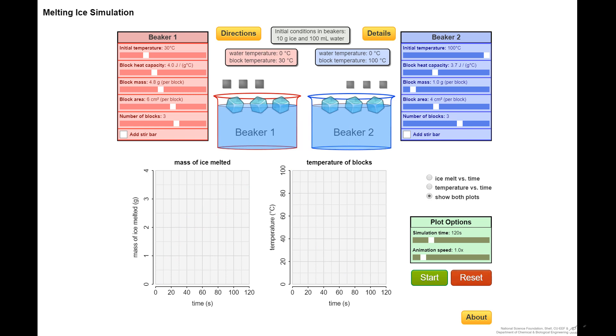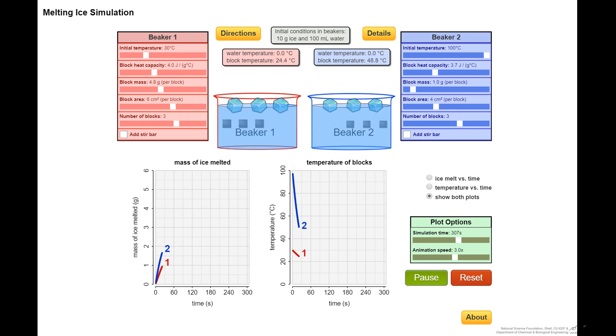So let's reset, and let's speed it up so it doesn't take as long, but we'll look at it for a longer time. And let's start again. And now what we've done is just speed up how we're displaying. You notice beaker two gets to zero degrees by 150 seconds, and beaker one is not there yet.